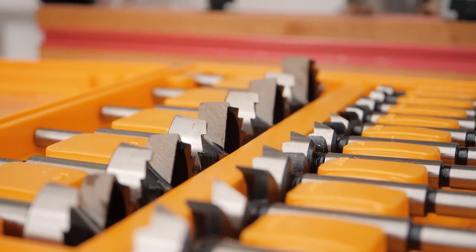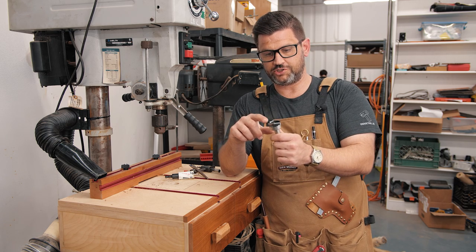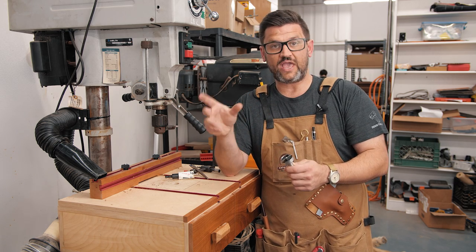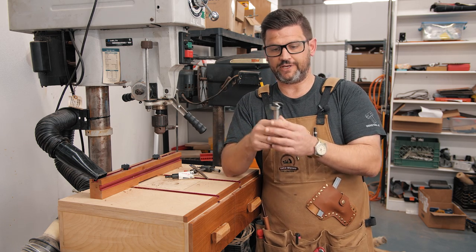So there's three types of Forstner bits, and they have to deal with how the edge looks. This is a sawtooth one. These are these new CMT bits. There is a wavy edged bit and a straight knife edged Forstner bit. I typically use the sawtooth one. I get good results.